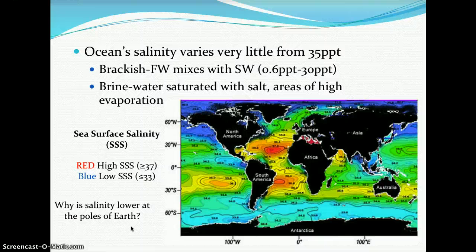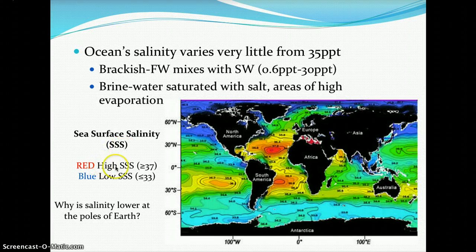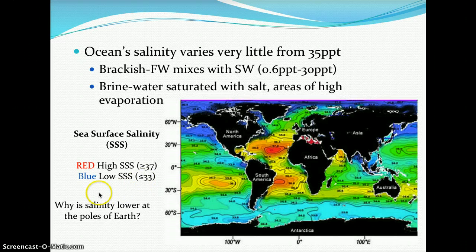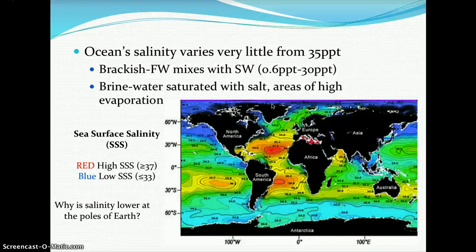In brine conditions, water is saturated with salt — occurring in tropical regions with high evaporation rates where solar energy is greatest. Water evaporates but salt is left behind, producing salinities around 37 ppt. Sea surface salinity (SSS) is highest (around 37) in tropical regions and lower (around 33) in polar regions. At the poles, melting glaciers release fresh water into the marine environment, lowering salinity. Along the equator, higher evaporation rates produce slightly higher salinity.